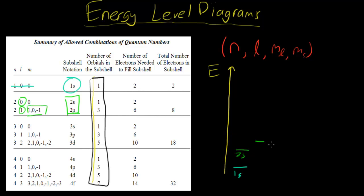1, 0, and negative 1. So we have 1, 0, and negative 1. So this is a 2p orbital. Now, that's done, so we're done with n equals 2. Now let's move on to n equals 3.